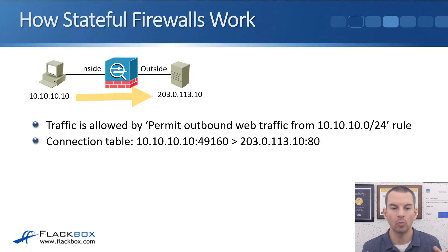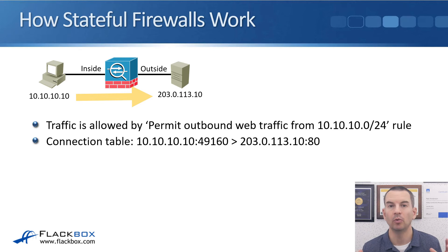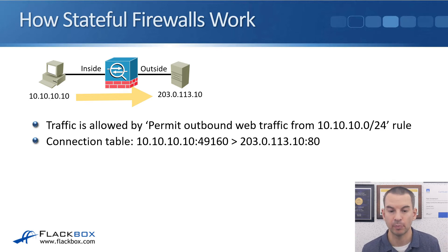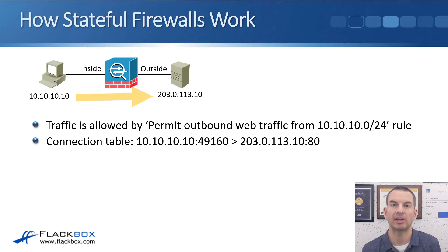When that outbound traffic is sent out, it is recorded in the firewall's connection table. The table now shows that a connection has been initiated from 10.10.10.10 using source port 49160, going out to 203.0.113.10 on destination port 80 for HTTP.